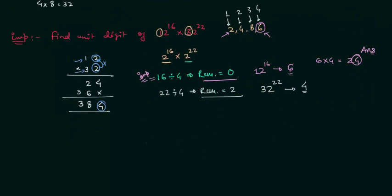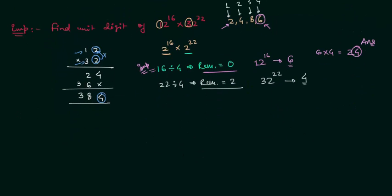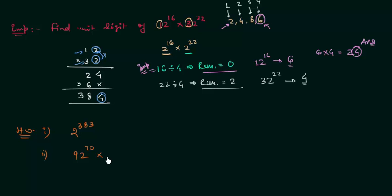Now we will move to the homework problems. Problem 1: find the digit at the unit place of 2 raised to power 383. Problem 2: find the digit at the unit place when you multiply 92 raised to power 70 by 112 raised to power 35. These are the two homework problems, and this is all for this presentation. See you in the next one.